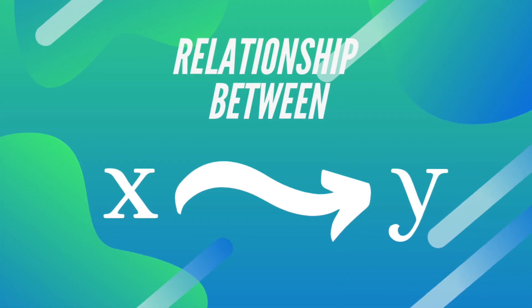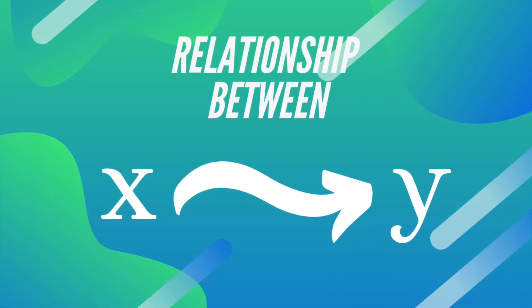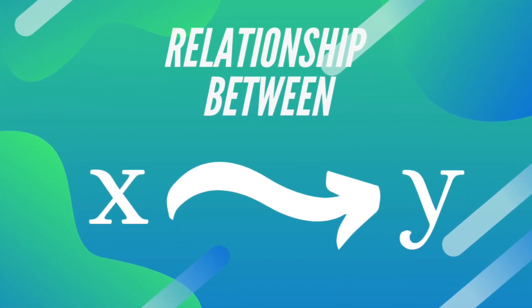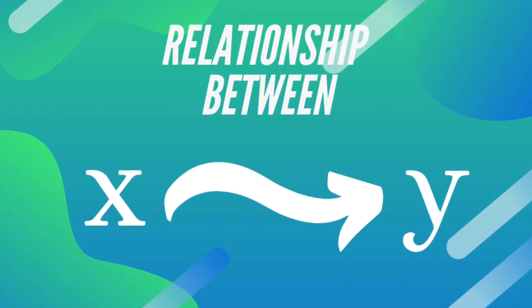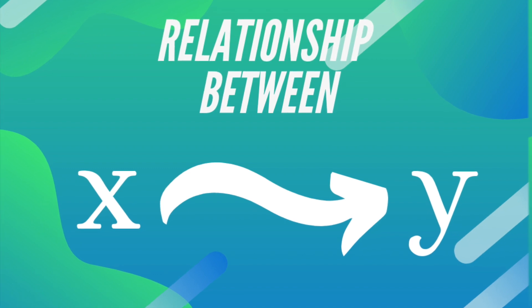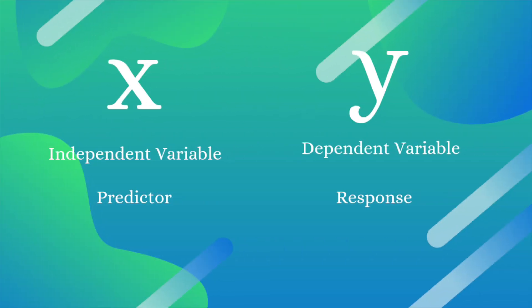So what is linear regression? Linear regression is basically finding the relationship between two variables x and y, where x is the independent variable also known as the predictor, and y is the dependent variable also known as the response.